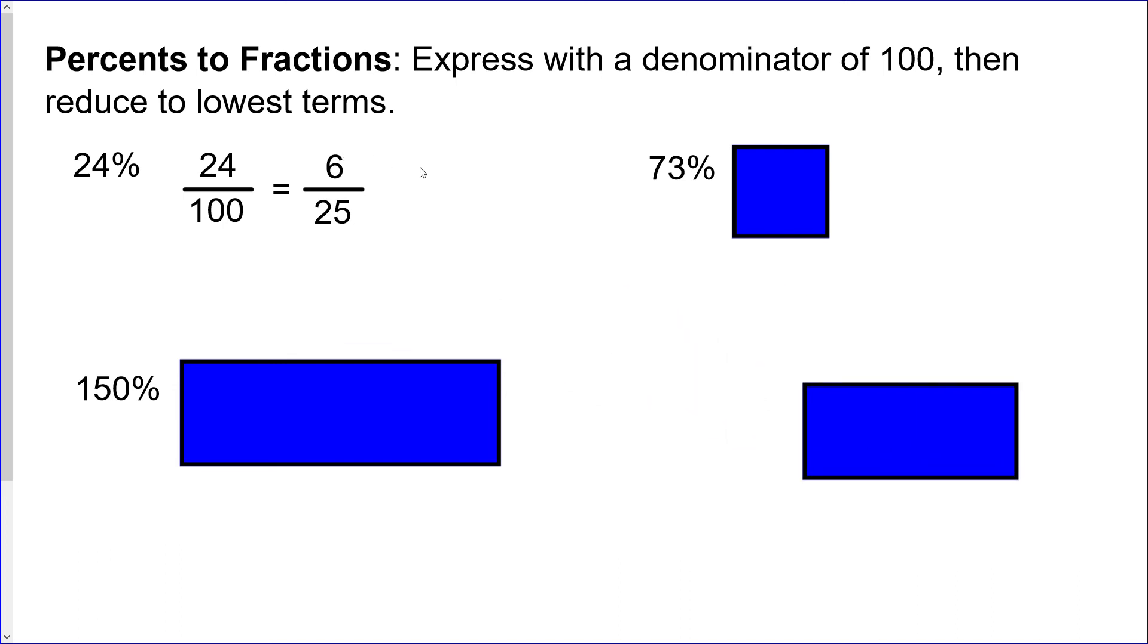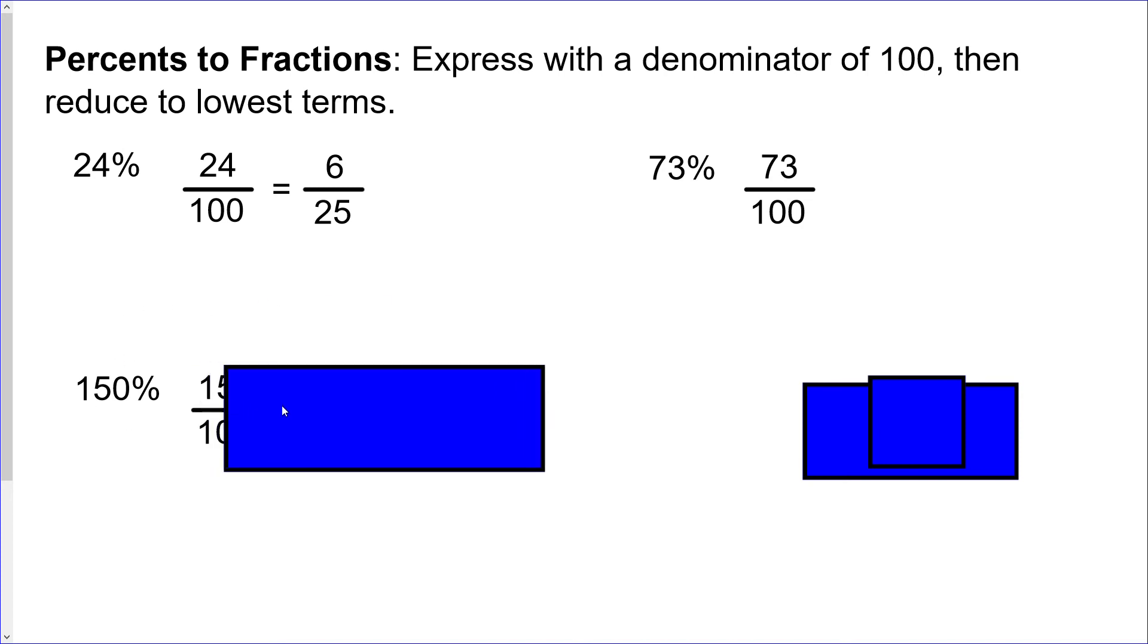Yes, I know we're bringing fraction and ratio stuff right back in here, but they're all connected so it's quite logical that we do that. On we go: 73 percent. So that's just 73 over 100 and you can't reduce that to lowest terms. Yay, very exciting, so we don't have to do anything with that.